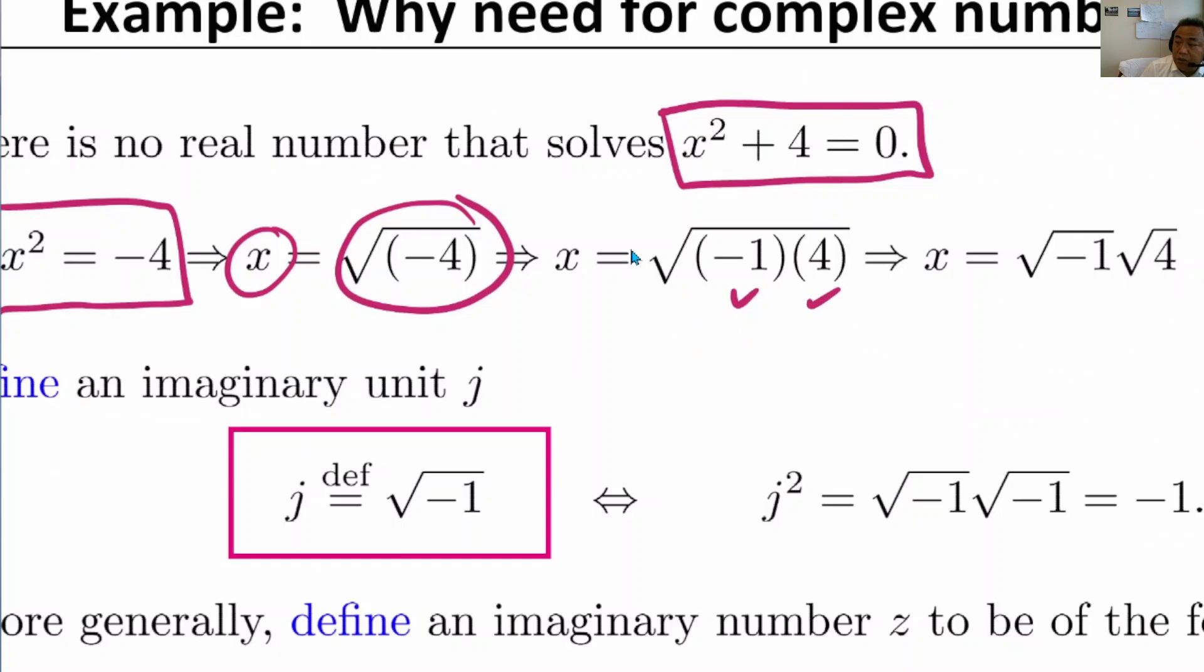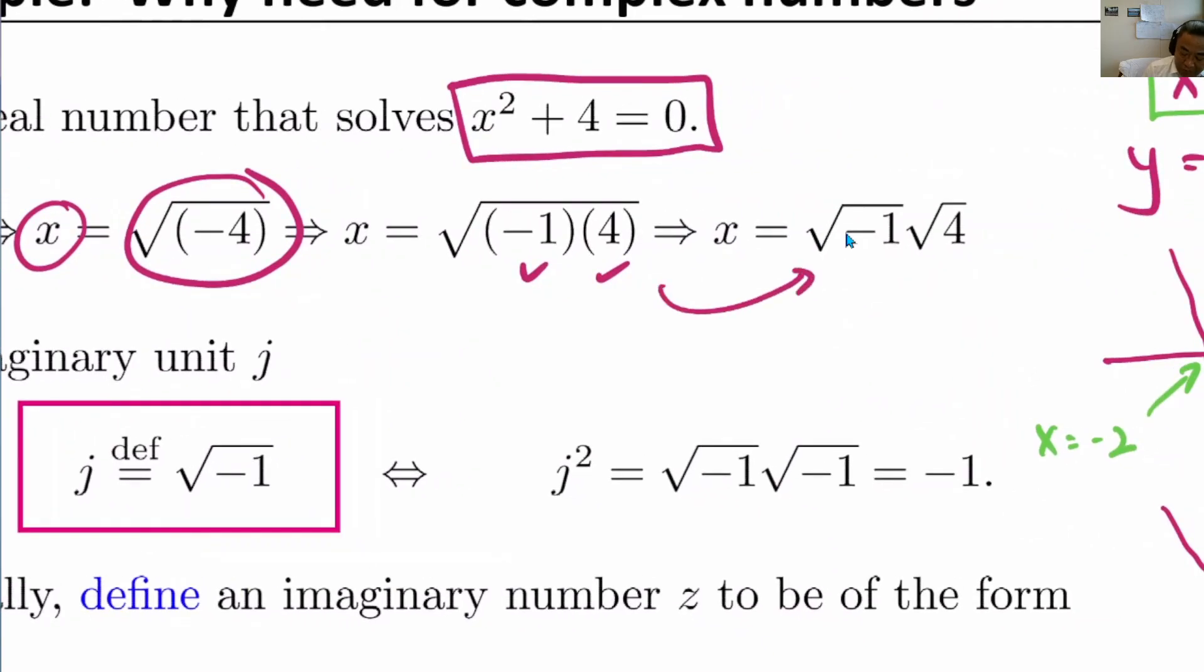Minus 4 is equals to minus 1 times 4, right? So nothing changed. The radical, this square root sign, is outside still. By the law of exponent, we can break this into two parts. So we have this, and remember we have defined that square root of minus 1 to be j, so it's j, and square root of 4 is plus minus 2.